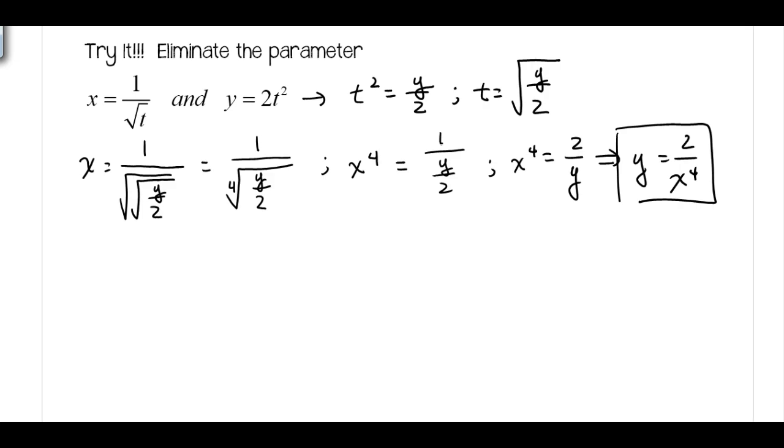Here's the solution to our example problem. You should have Y equals 2 over X to the fourth. We're going to solve this equation for T, so we get T is equal to the square root of Y over 2. Then we'll substitute that in. Once we substitute that in for T, we're going to get 1 over the fourth root. We'll raise each side to the fourth to get rid of our root. We get X to the fourth is 2 over Y, and solving for Y we get Y equals 2 over X to the fourth.